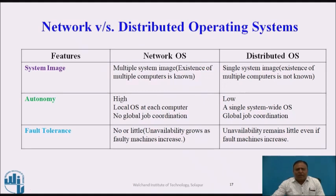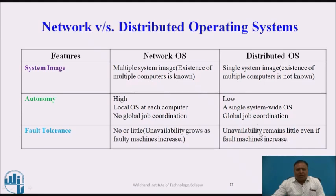Now, the difference between network and distributed operating systems. Three features are considered: system image, autonomy, and fault tolerance. In a network operating system, multiple system images exist — different operating systems run on different workstations — whereas a distributed system has only a single system image. Autonomy is high in a network operating system, with a local operating system on each computer and no global job coordination, while autonomy is low in a distributed operating system with a single system-wide OS and global job coordination. Fault tolerance is very little in a network operating system — unavailability grows as faulty machines increase — but in a distributed operating system, unavailability remains low even as faulty machines increase.